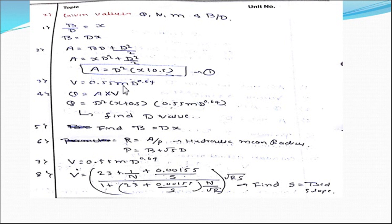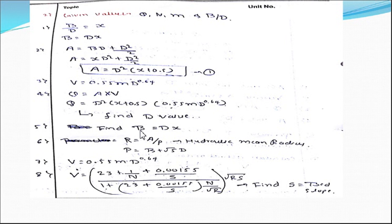Next, the critical velocity equation is: V₀ = 0.55 × m × d^0.64. Also, the discharge equation is Q = Area × Velocity. Substituting equation one for area and the velocity equation, we get Q entirely in terms of d, so we can solve for d (the depth). Once d is known, since b = d×x, we can easily find b. So both depth and base width are calculated.